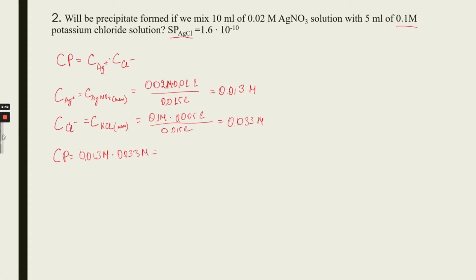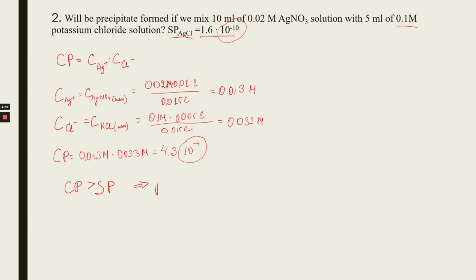Now we calculate the concentration product: 0.013 mol/L × 0.033 mol/L = 4.3 × 10⁻⁴. The solubility product is 10⁻¹⁰. Comparing these two numbers, we see that the concentration product is higher than the solubility product, so we can make the conclusion that a precipitate will be formed.